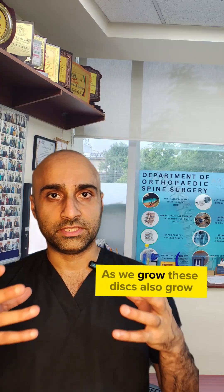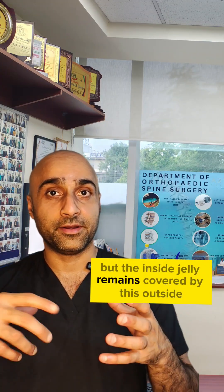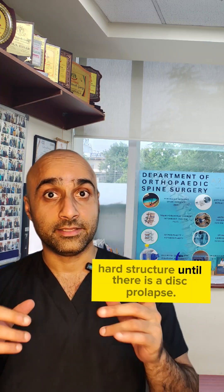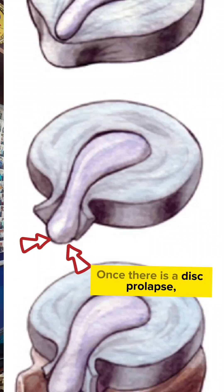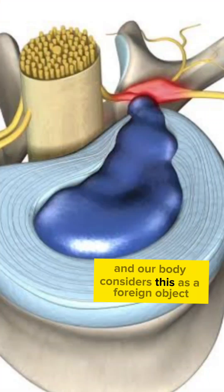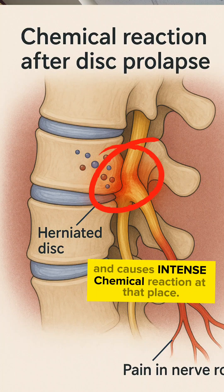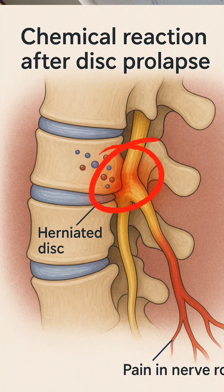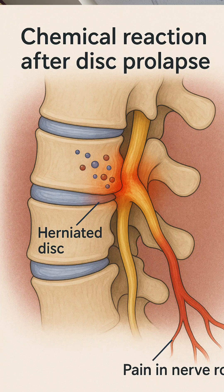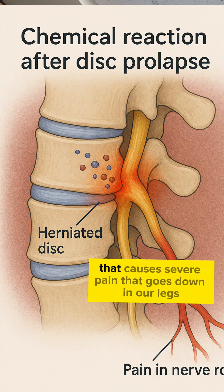As we grow, these discs also grow but the inside jelly remains covered by the outside hard structure until there is a disc prolapse. Once there is a disc prolapse, this jelly-like substance comes in contact with the surrounding for the first time, and our body considers this as a foreign object and causes an intense chemical reaction at that place. The nerve root which is close to that disc prolapse gets inflamed and irritated because of that severe chemical reaction, and once the nerve root is inflamed, that causes severe pain that goes down in our legs.